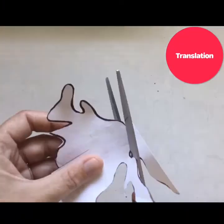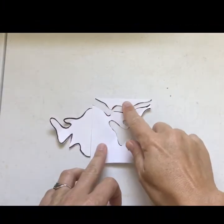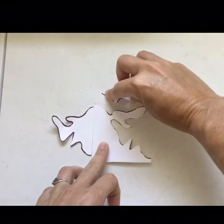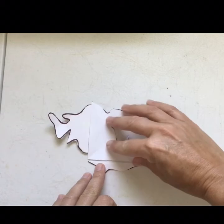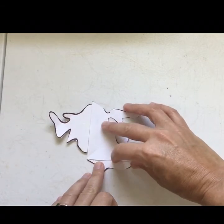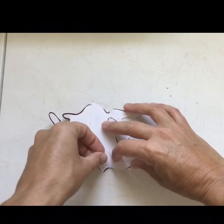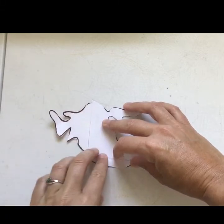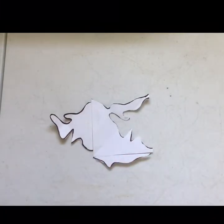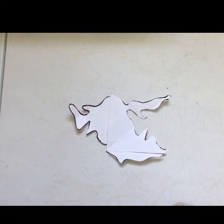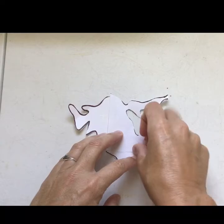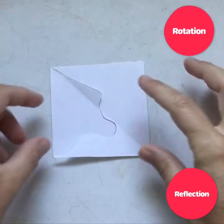Now I'm going to take that shape that I cut out and I'm going to slide it down, translate it down to the other side of the square that I didn't cut, and I'm going to tape it up. Now I have created an interesting stencil that should cover a surface with no gaps or overlaps.